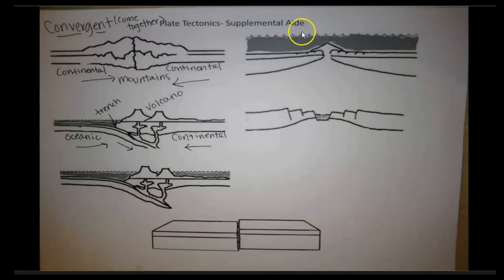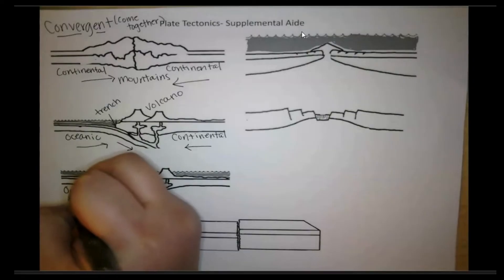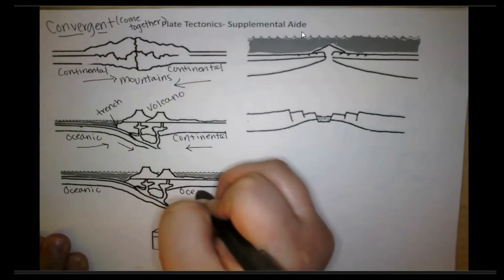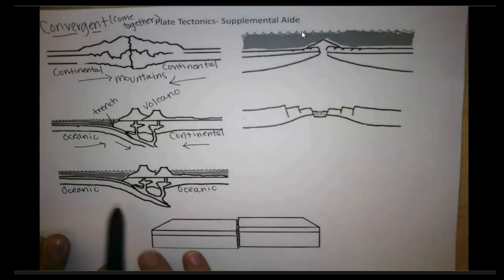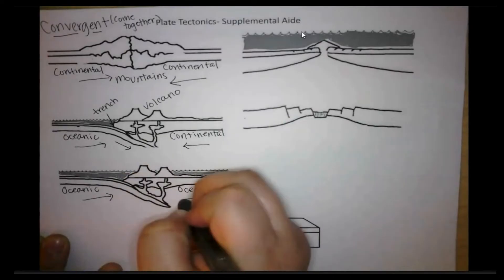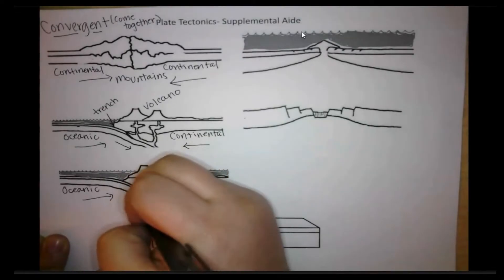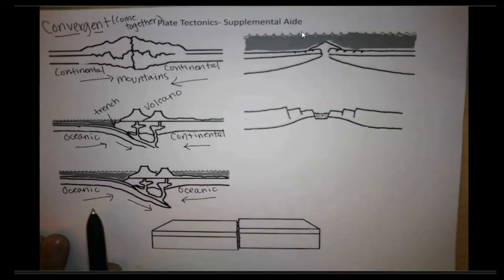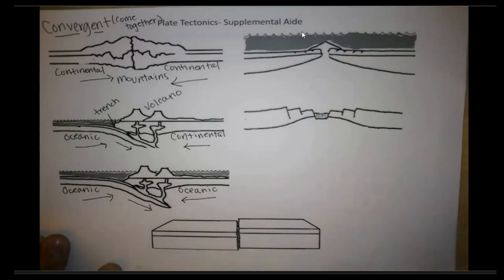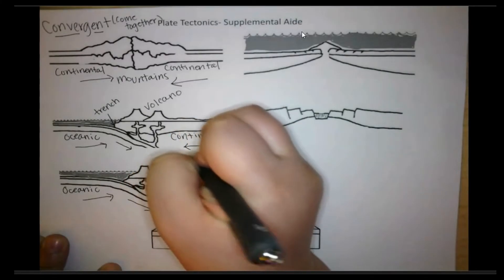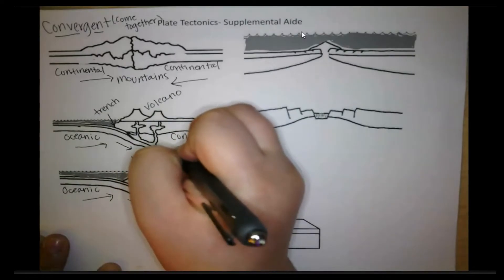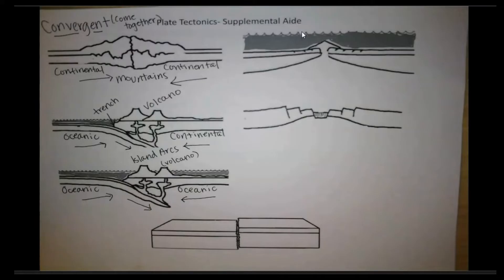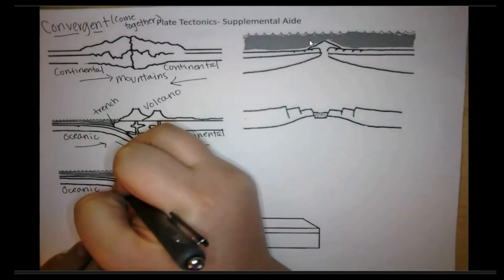Our last convergent boundary example is going to be oceanic-oceanic. So I'm going to write oceanic here and oceanic here. We do also have subduction when it's oceanic to oceanic crust. The older, denser crust will dive down underneath the younger oceanic crust. So it's very similar — oceanic dives down underneath, comes down into the earth, melts, that magma rises, and we get a volcano forming. We also have subduction that happens in the ocean, so we're going to have another trench. These trenches are even deeper because it's two oceanic crusts.